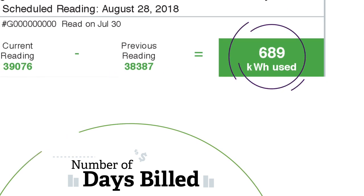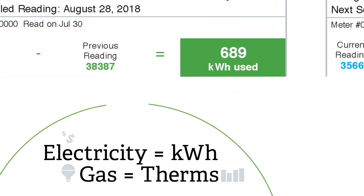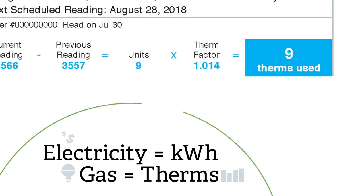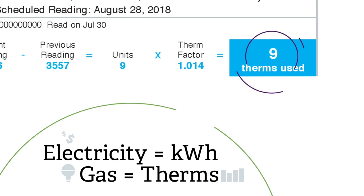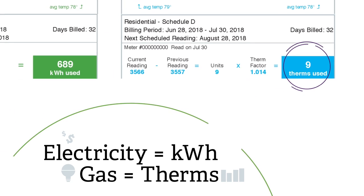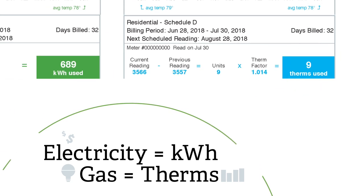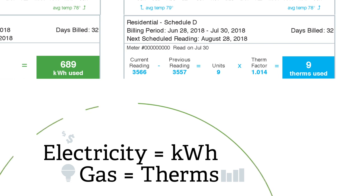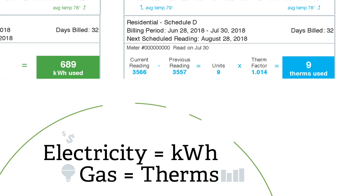Your electricity use on your bill is expressed in kilowatt hours, while natural gas use is expressed in therms. Each represents one unit of energy and is used to calculate your total energy use and costs.